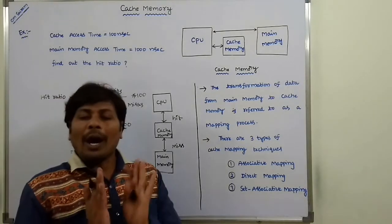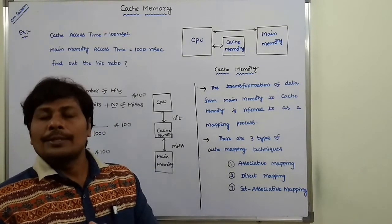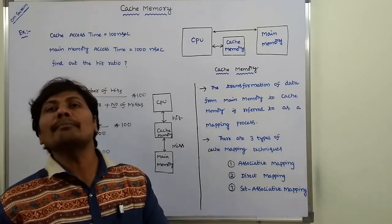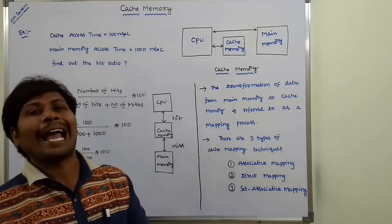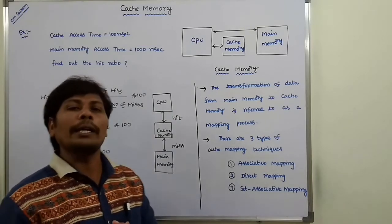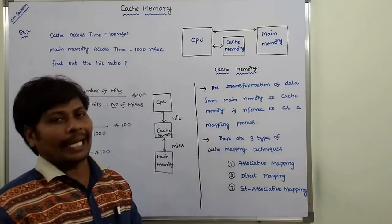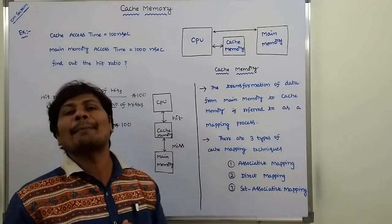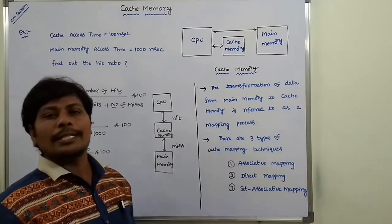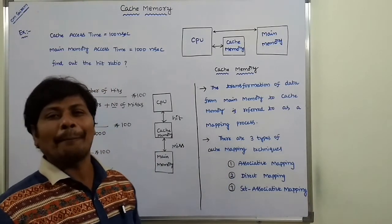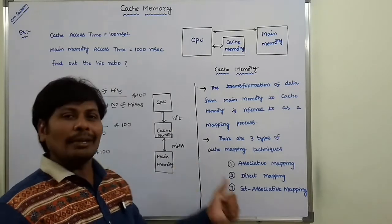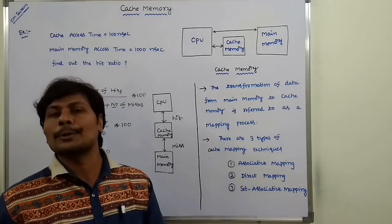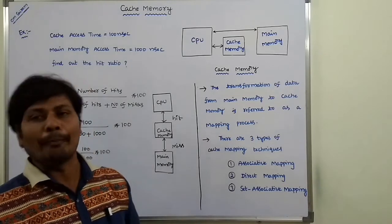What is mapping? The transformation of data from main memory to cache memory is called a mapping technique. There are three types of mapping techniques: the first one is associative mapping, the second one is direct mapping, and the third one is set-associative mapping.